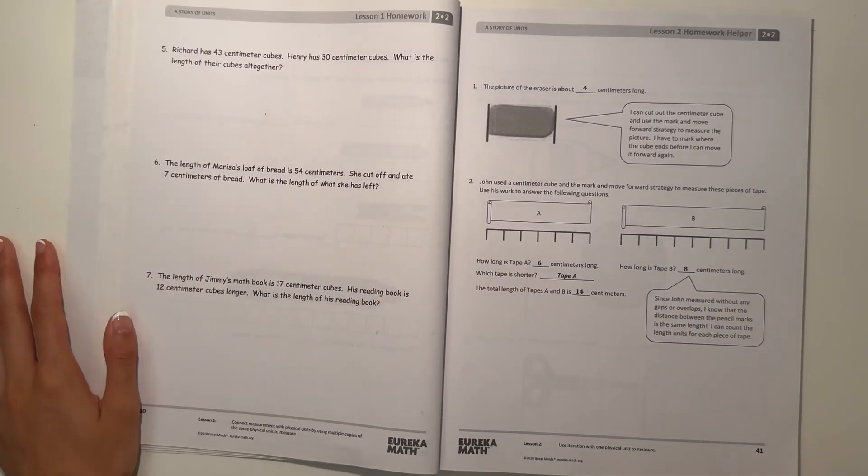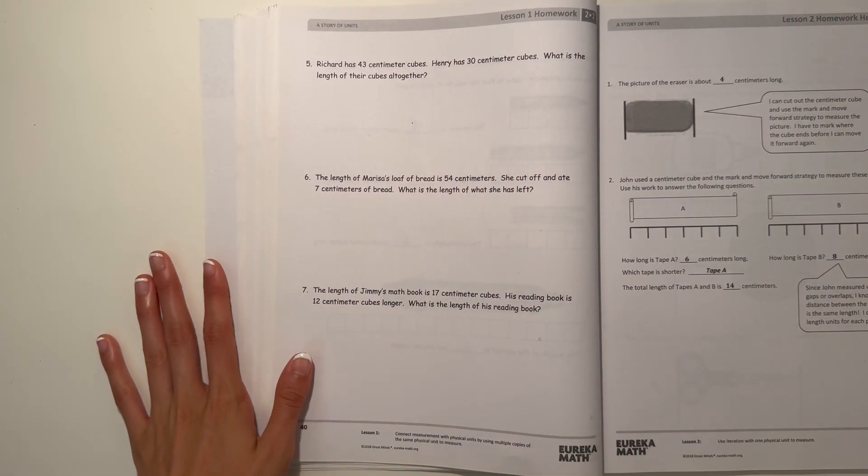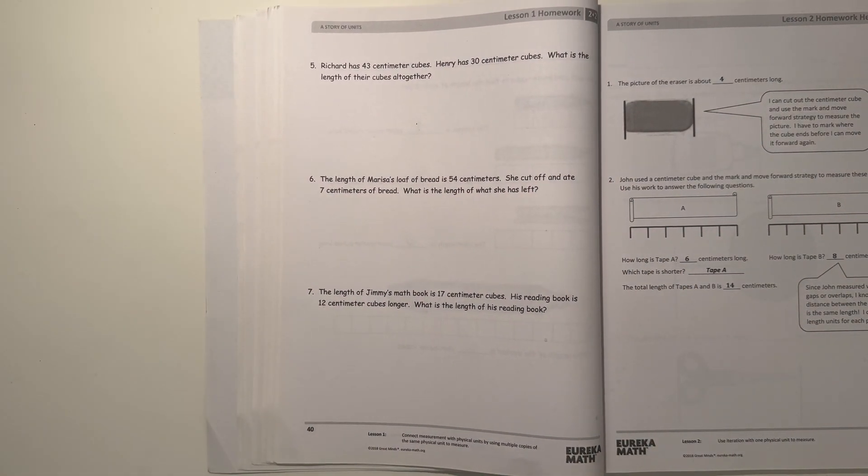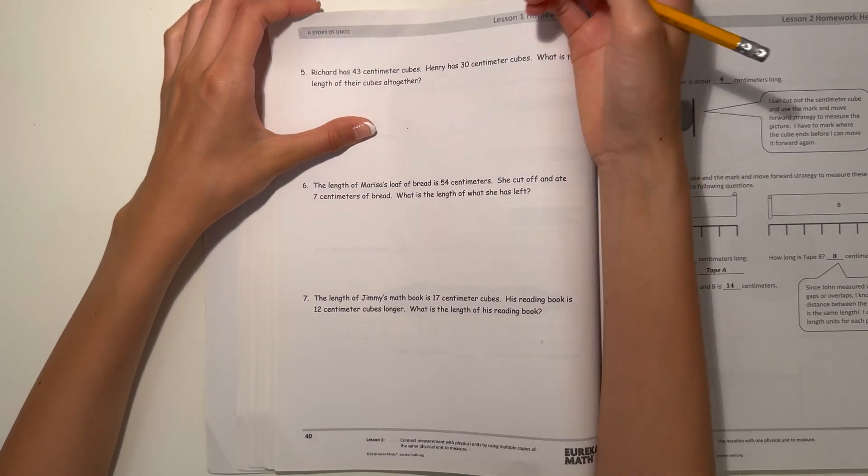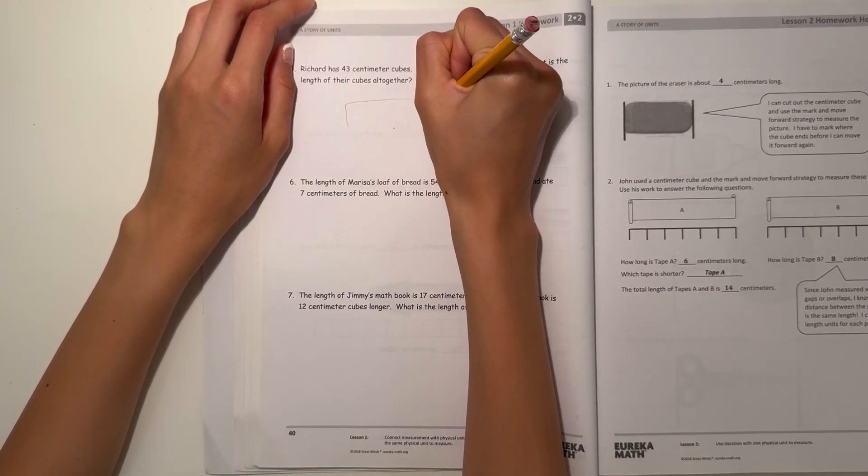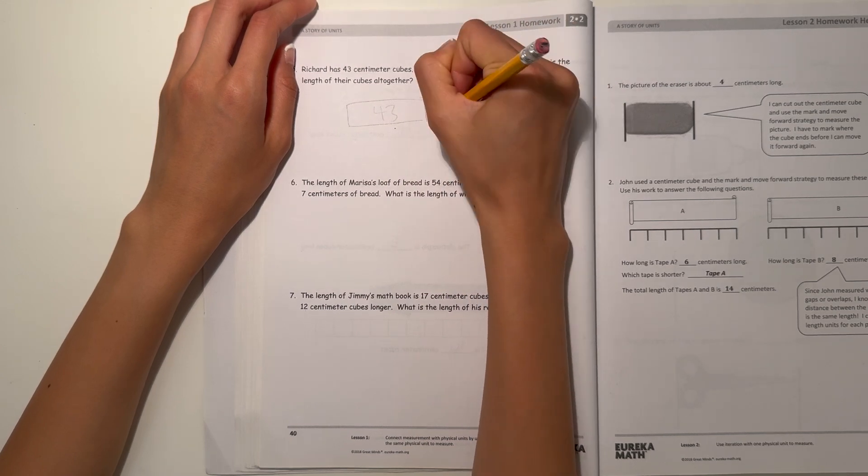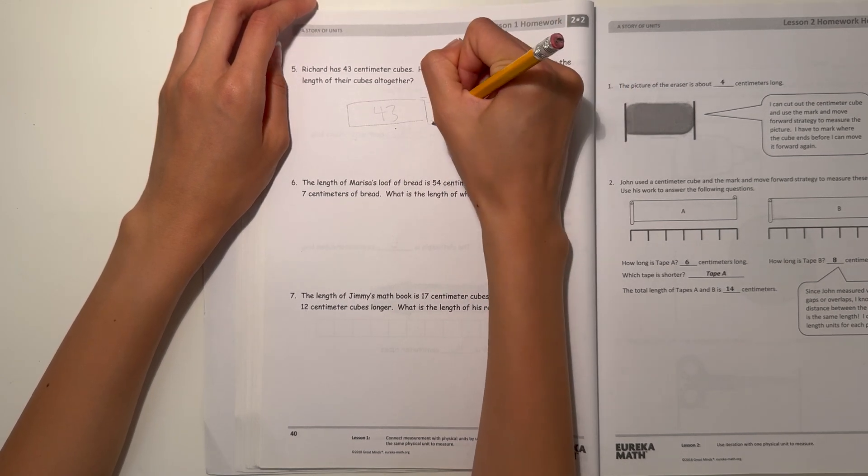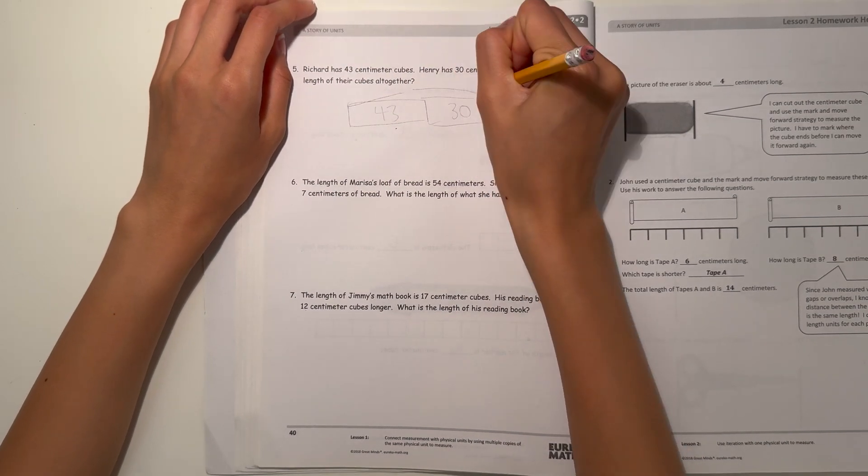Next page. Number 5: Richard has 43 centimeter cubes, Henry has 30 centimeter cubes. What is the length of their cubes altogether? Let's make a diagram. Here we have 43, and Henry has 30. How many do they have altogether? This is what we're trying to find out.